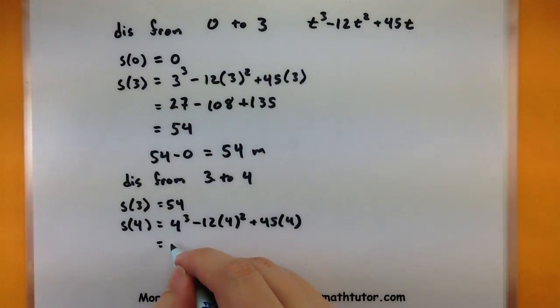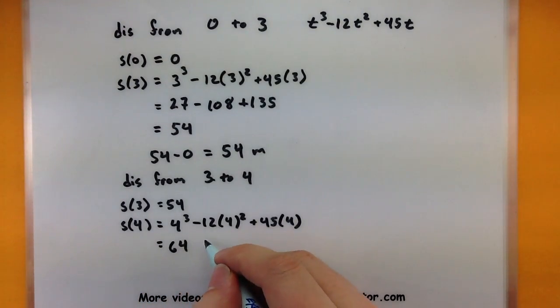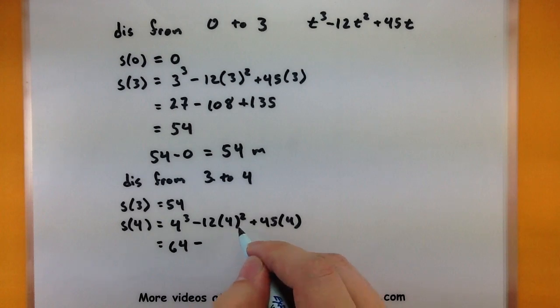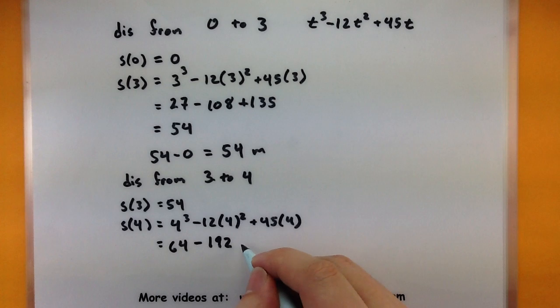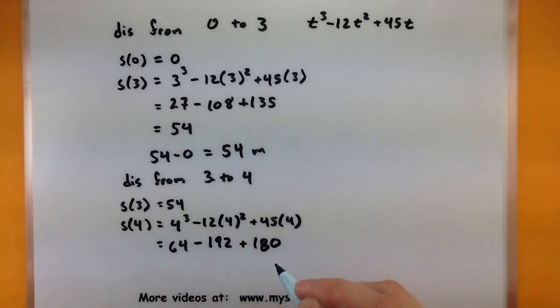Alright, simplifying this guy down, I would get a 64 minus, let's see, 12 times 16, so 192 plus 45 times 4, 180. Alright, 64 - 192 + 180, that is 52.